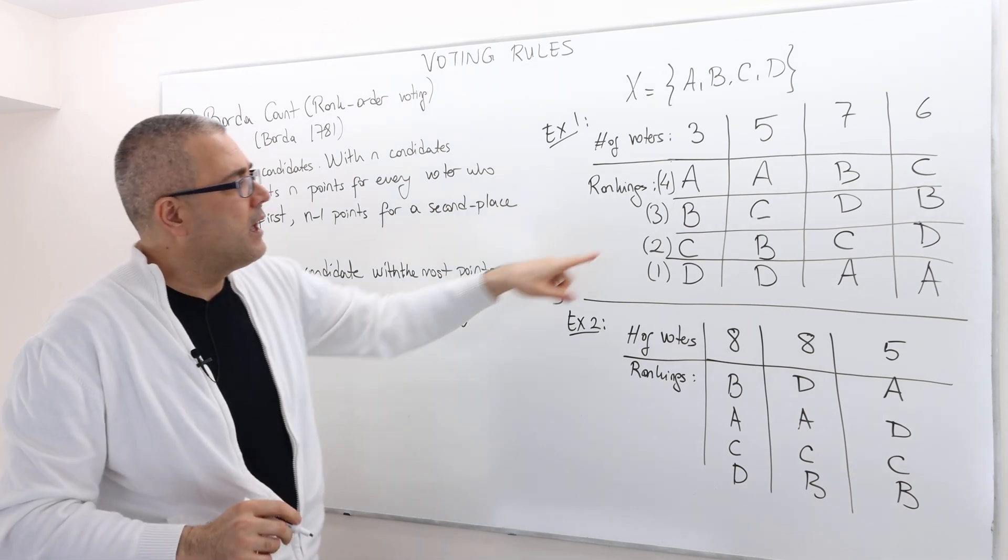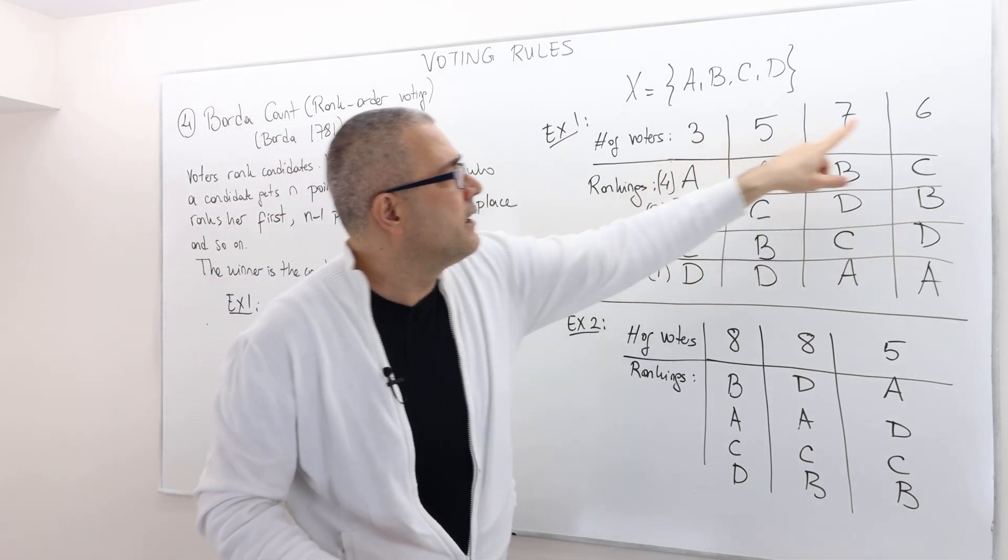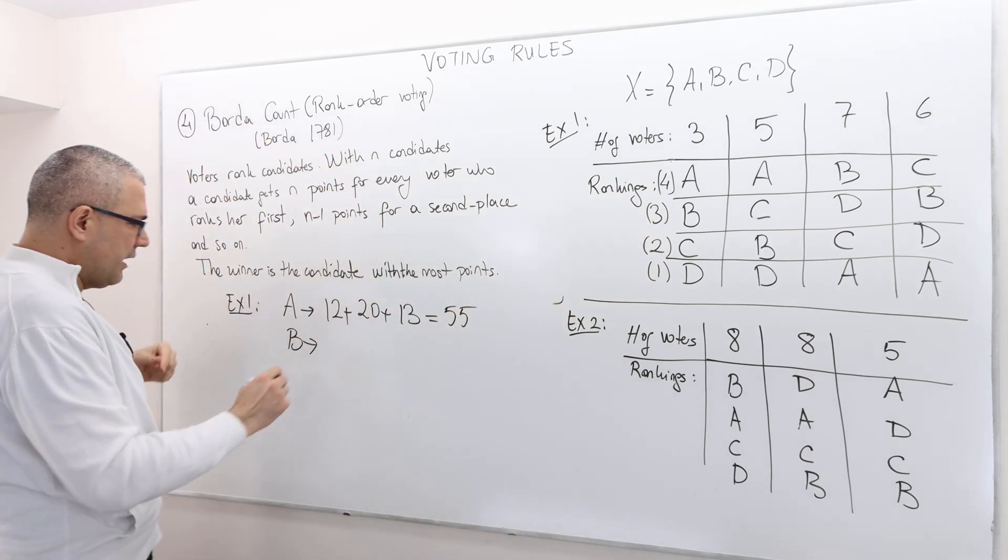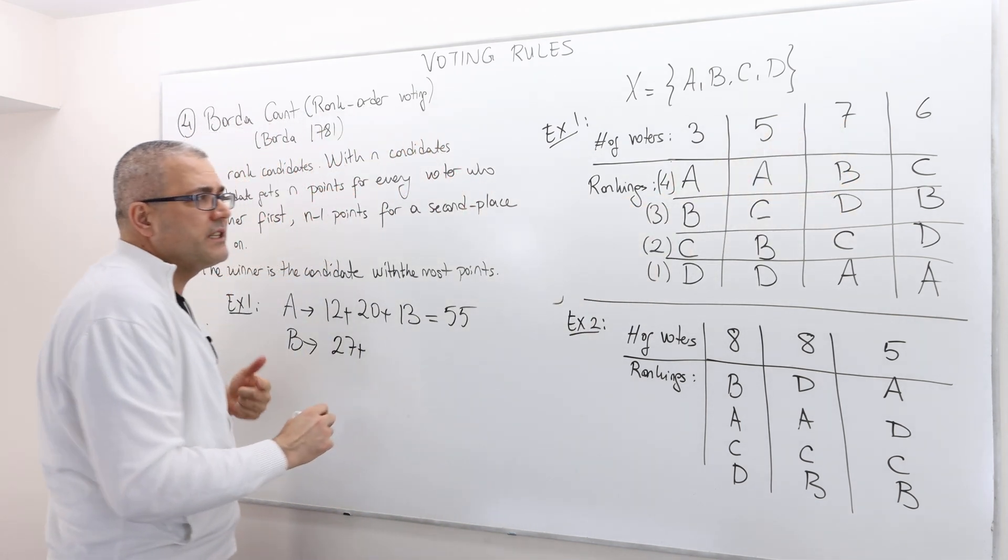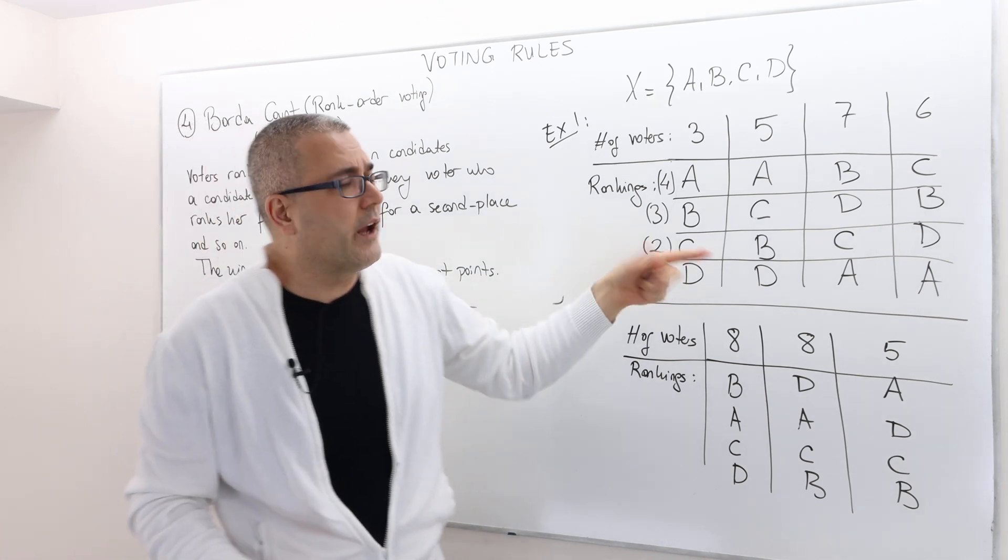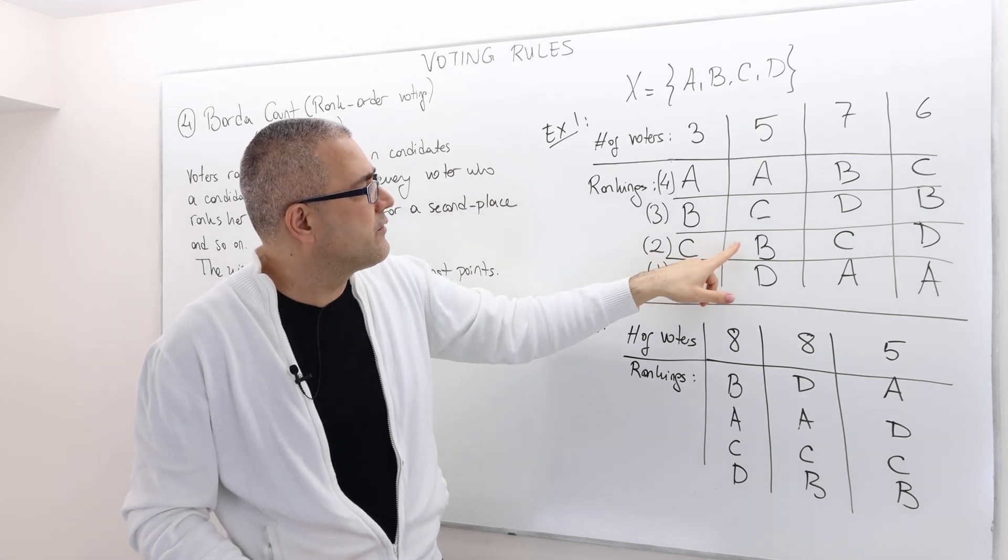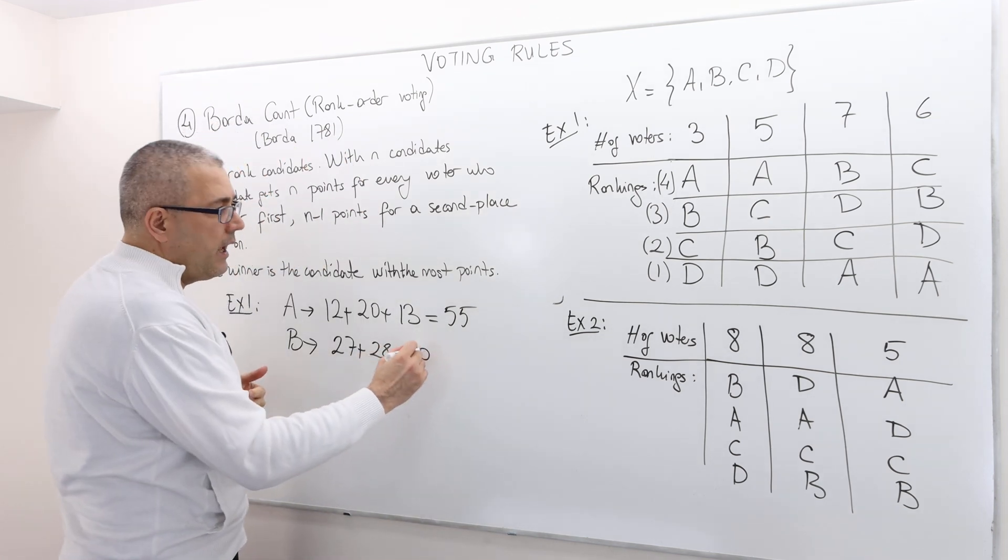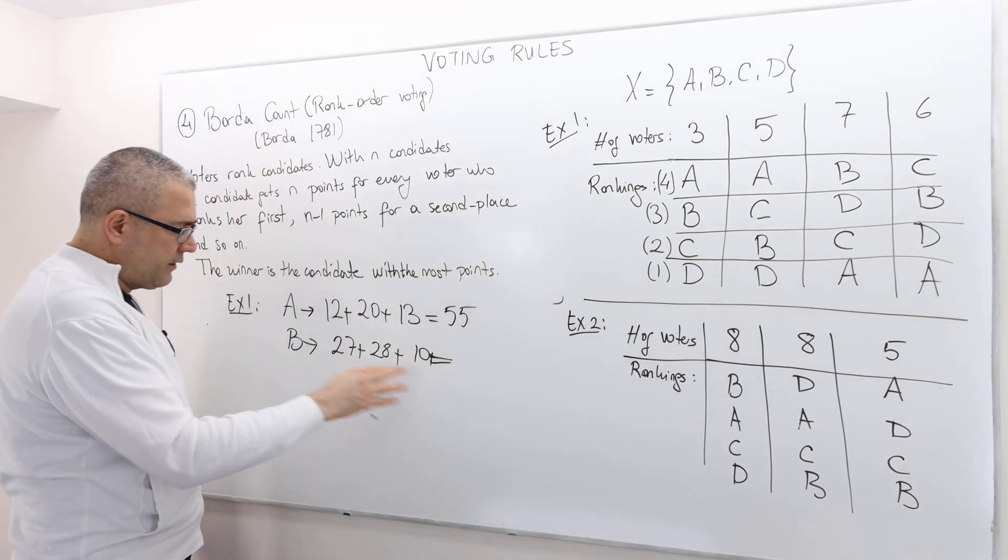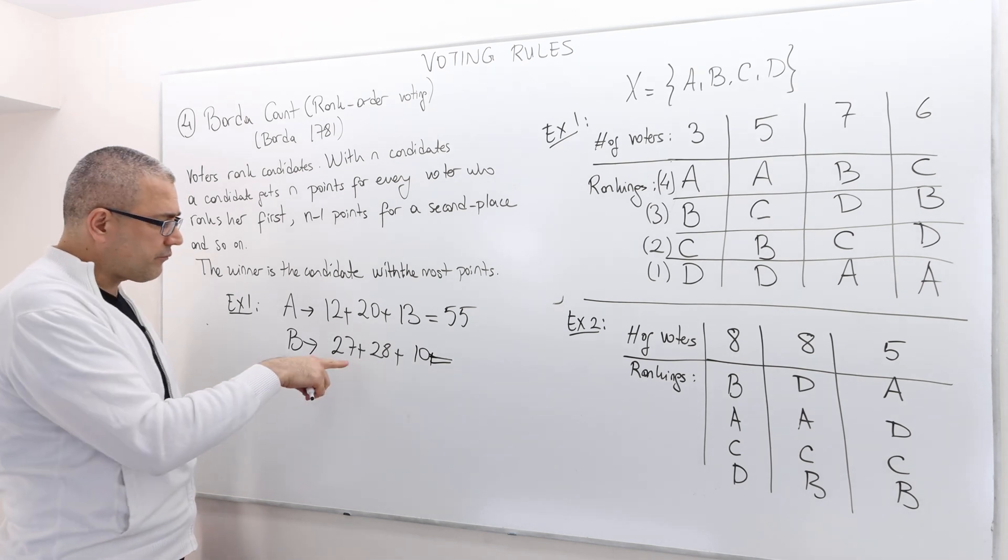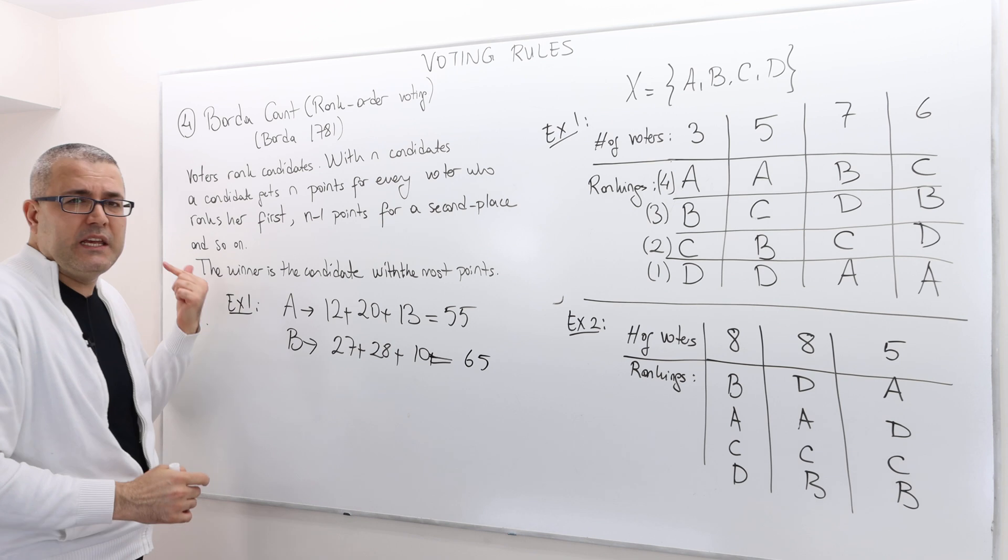So what about candidate B? Candidate B is ranked second by nine people, nine voters, so therefore three times nine, 27. Plus B is ranked first only by seven people, so seven times four, 28. Plus, I don't know why I started from the second rank, the third rank B is third ranked by five people, so 10. And then finally B is never ranked last, so no plus one points. So that's it. The total point is here, 28, 27 plus 28, so this is 40, 55, another 10, 65 points. So B beats A, for example. So A isn't the winner.